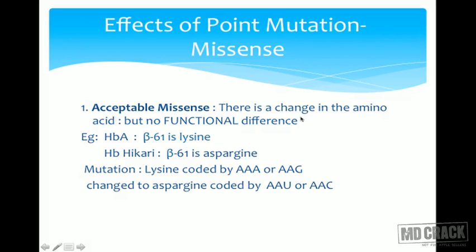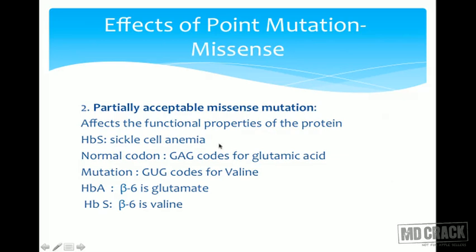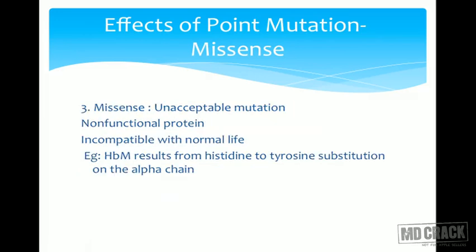Another effect is missense mutation, which has subtypes. Acceptable missense: there is a change in amino acid but no functional difference — for example, HbA β61 is lysine while hemoglobin Hikari β61 is asparagine, yet hemoglobin Hikari functions normally. Partially acceptable missense: it affects the functional properties of the protein — like HbS in sickle cell anemia, where the normal glutamic acid codon is mutated to valine, causing hemolytic anemia.